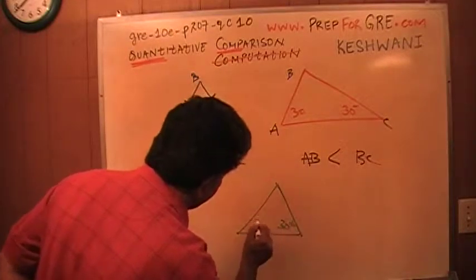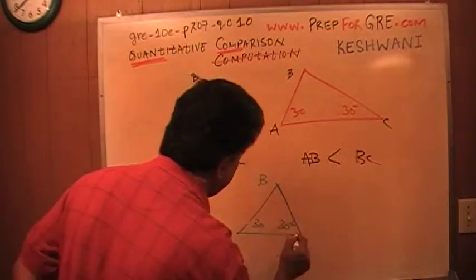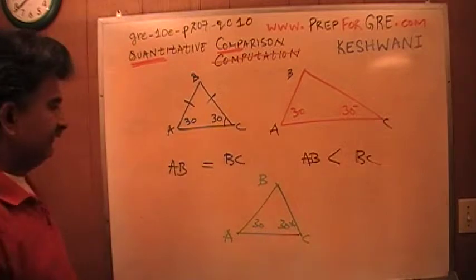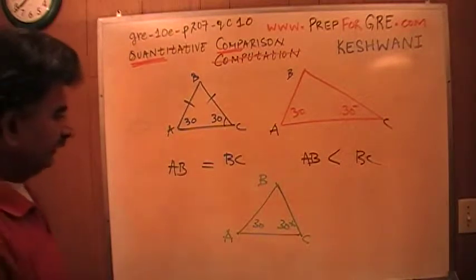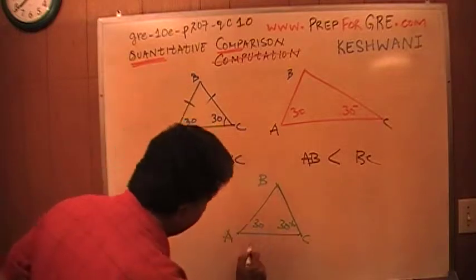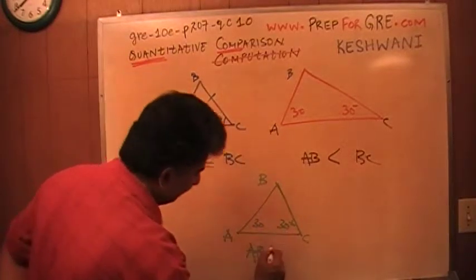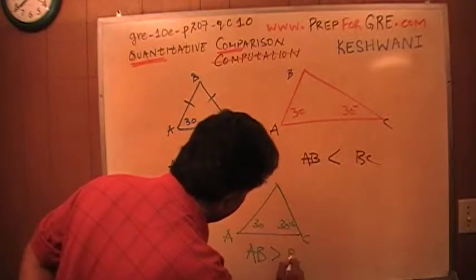If this is more than 30 and this is 30, if that's the case, then since this is more than 30, angle C is more than 30 in this scenario. Therefore AB, which is a side facing angle C, is going to be more than BC.